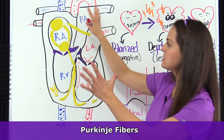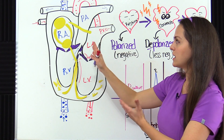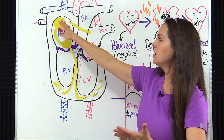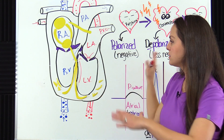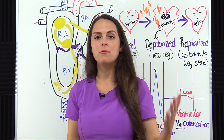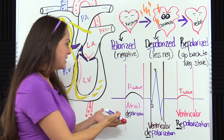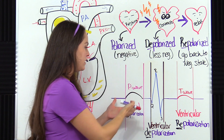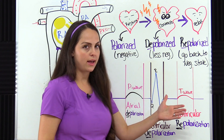Whenever this system occurs — the electrical conduction system shooting from the SA node all the way to the Purkinje fibers — we can pick this up and see it as our PQRST complex.